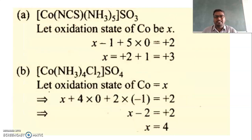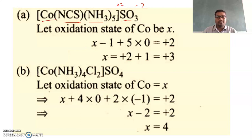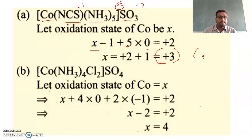Let us look at another cobalt complex containing NCS (isocyanide), amine, and sulfur trioxide as counter ion. Sulfur trioxide has charge −2, so the coordination sphere charge is +2. The oxidation state of cobalt is x. There is one NCS ligand with charge −1 and five amine ligands each with charge zero: x + 1×(−1) + 5×0 = +2. Solving: x − 1 = +2, so x = +3. The oxidation state of cobalt is +3.